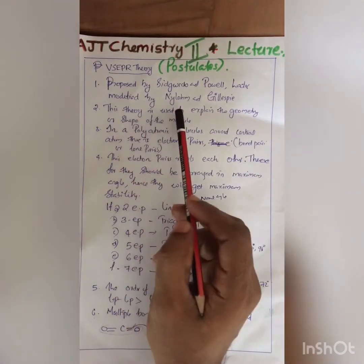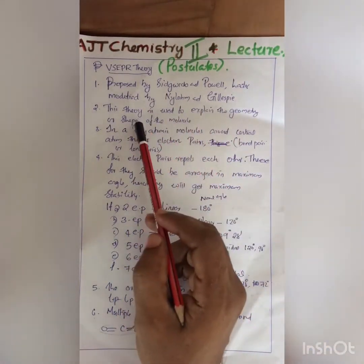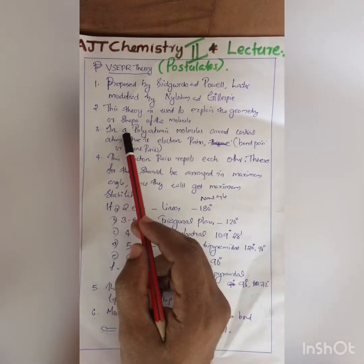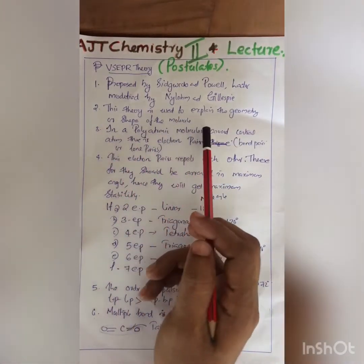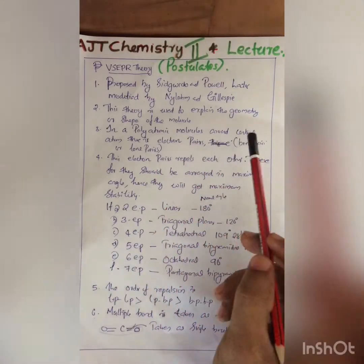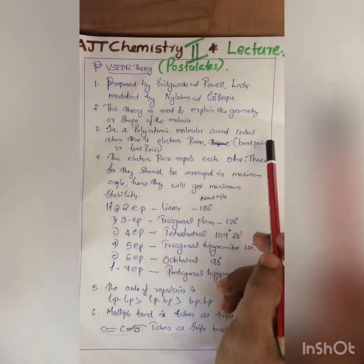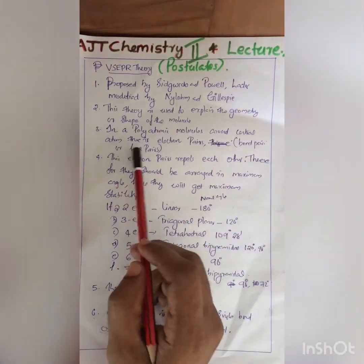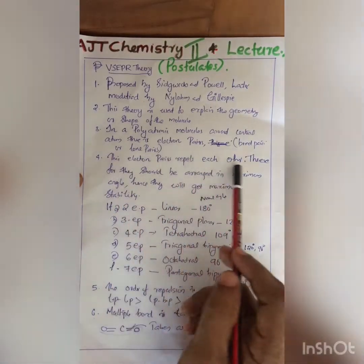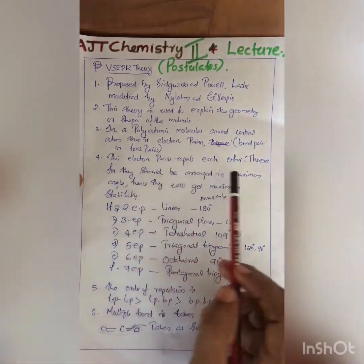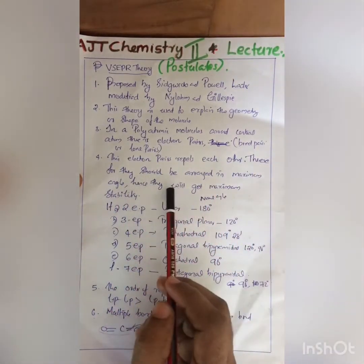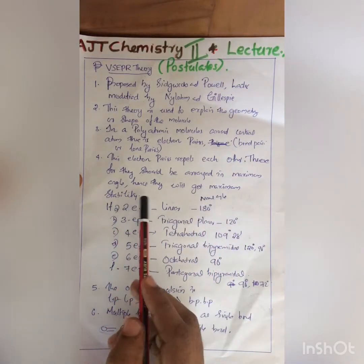This theory is used to explain the geometry or shape of the molecule. In a polyatomic molecule, around the central atom there are electron pairs — we call them bond pairs or lone pairs. These electron pairs repel each other. Therefore, they should be arranged at maximum angles, and hence they will get maximum stability.